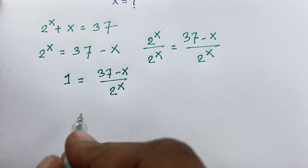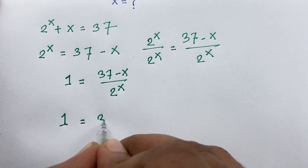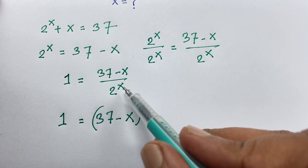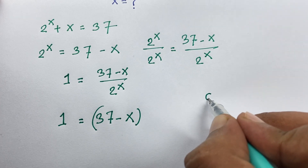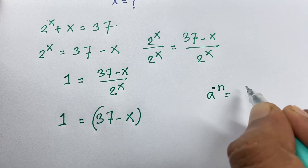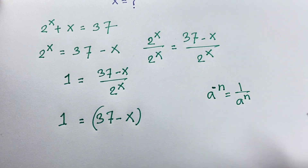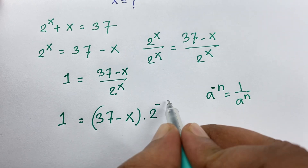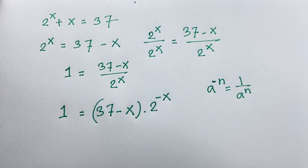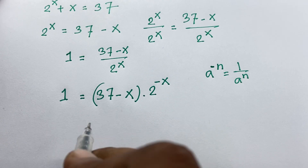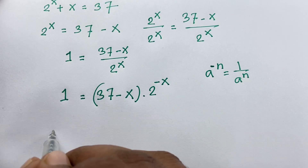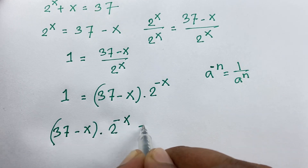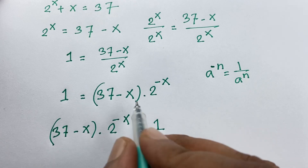Now, 1 equals 37 minus x times 2 to the power minus x. We know the exponential law: a to the power minus n equals 1 over a to the power n. According to this law, 1 over 2 to the power x equals 2 to the power negative x. So we have 37 minus x times 2 to the power minus x is equal to 1.